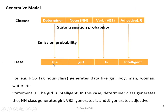For example, if the statement is 'The girl is intelligent,' we have to assign the part of speech tag to each word. For that we use the generative model in which the flow is downwards. We take two probabilities: emission probability and state transition probability. These values come directly from the emission probability matrix and the state transition probability matrix, which are generated from our training data — that is, from the corpus.